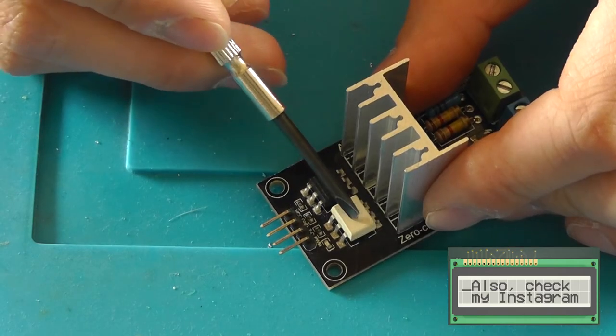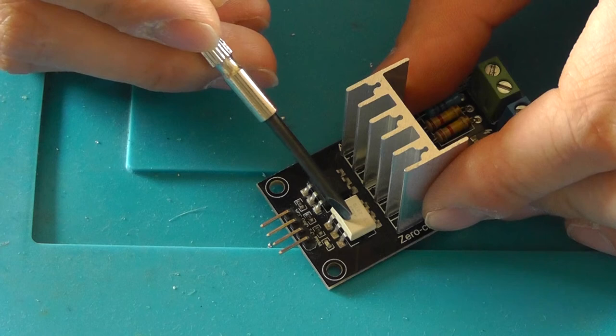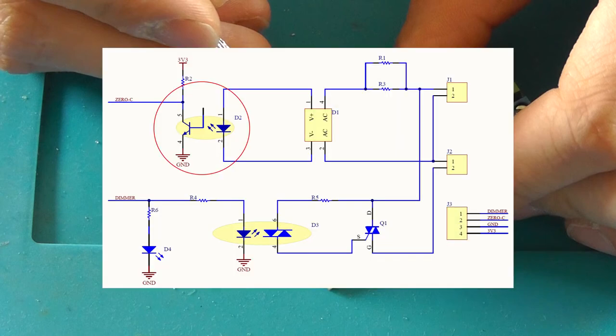Over here you can see the zero cross point detector, which is basically just an optocoupler. An optocoupler isolates different voltages from each other by using light. If you take a look at the schematic, you can see the optocoupler over here and the circuitry that drives it. This is basically a rectifier that turns AC into DC. The other optocoupler is used to isolate our microcontroller from the AC signals going through the board, and that optocoupler provides the actual signal that drives the triac.